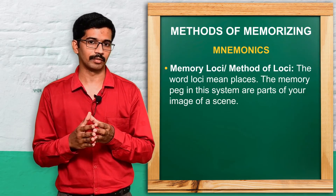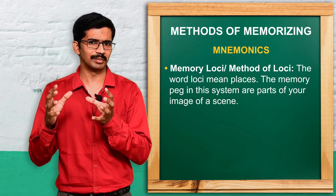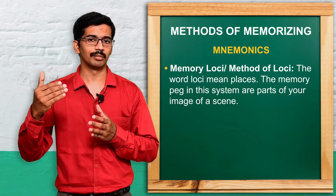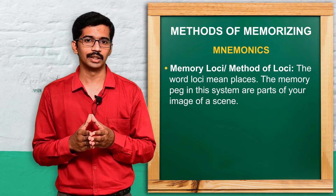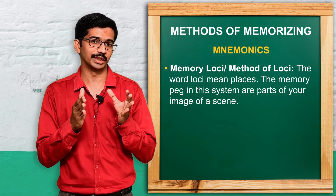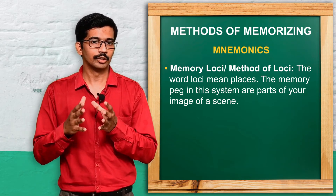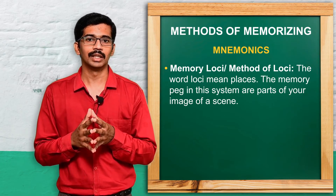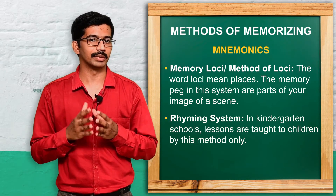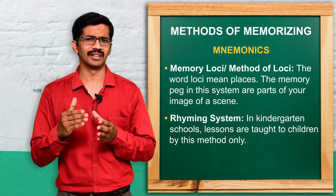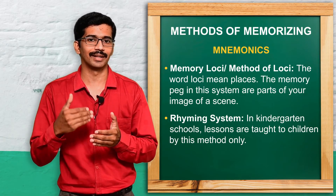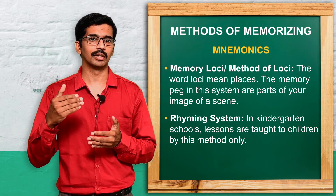Next one: memory loci. Memory loci means certain places or certain images will be used for remembering. For example, if you study the classical conditioning theory in psychology and it comes in an examination, you will be remembering it with certain images — images of a dog, experiment, bell, food, like that. So that is memory loci. Come to the next one: rhyming method. Whatever small children or kindergarten children want to learn, they learn it in the form of a song or small poems or rhymes. That is the rhyming method.